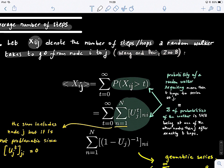A random walker needs to take to go from i to j. It's expressed as the probability, so look at this. This is the probability of a random walker requiring more than t hops to arrive at node j. So what is the probability that our walker will go from i to j in more than t hops.